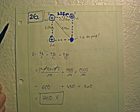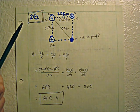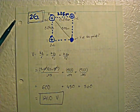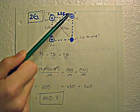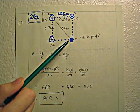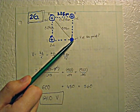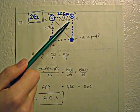Okay, so this is problem 26. The problem gives us three positive charges and one reference point arranged in a rectangle.